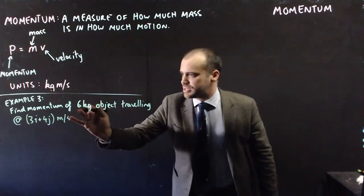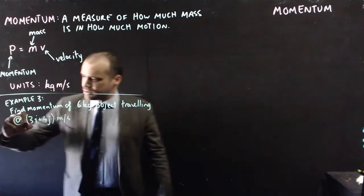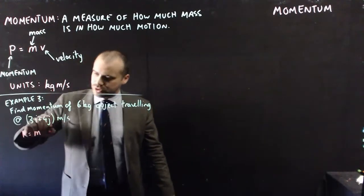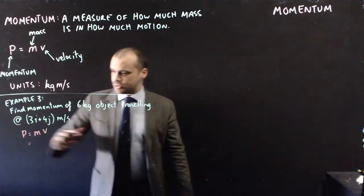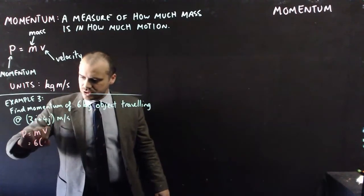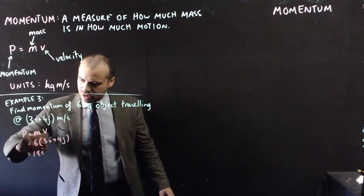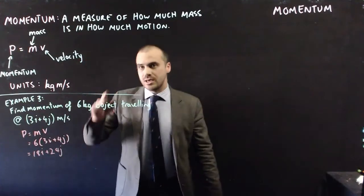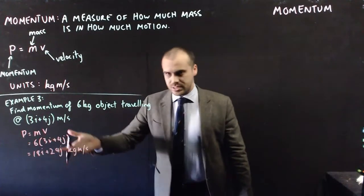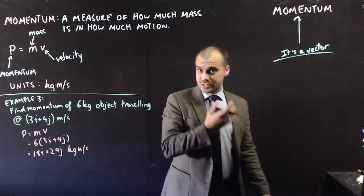We might want to find the momentum of a 6 kilogram object traveling at 3i plus 4j meters per second. Again, we use our formula: momentum equals mass times velocity. The mass is a scalar quantity, it's 6, but the velocity is a vector: 6 times (3i plus 4j). We get 18i plus 24j kilogram meters per second. This is a vector. It's an arrow. It has direction. It's definitely worth writing down that momentum is a vector.